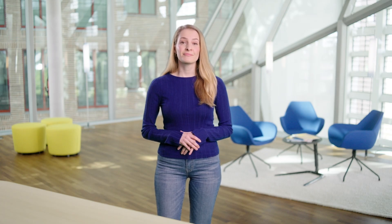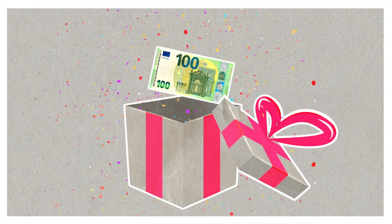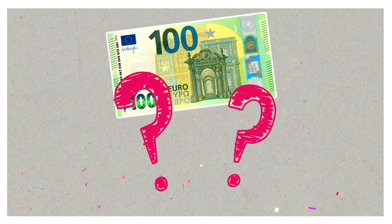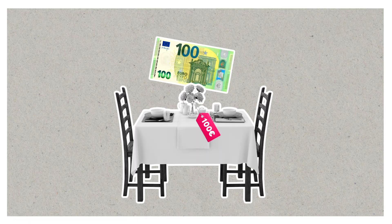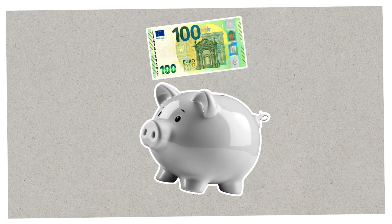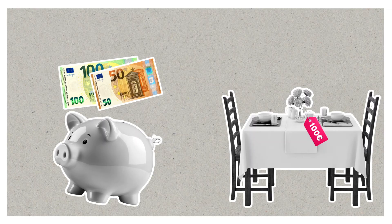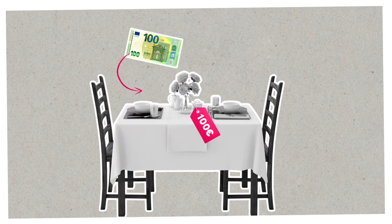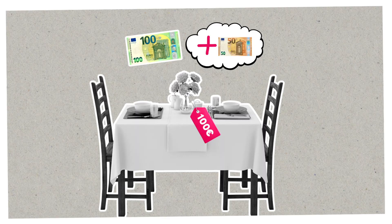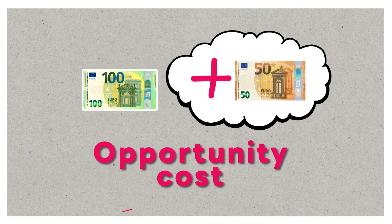Yes and no. You can capture some aspects of your choices in numbers, but that's only part of the picture. For instance, imagine you just received 100 Euro as a birthday gift. You consider using the money to treat your dating app match to a very nice dinner. Alternatively, you could put the money in a savings account. Let's say 100 Euro in your savings account would earn you an additional 50 Euro from interest over the next 10 years. This means your date would cost the 100 Euro plus the 50 Euro you could have earned — those additional 50 Euro are the opportunity cost.